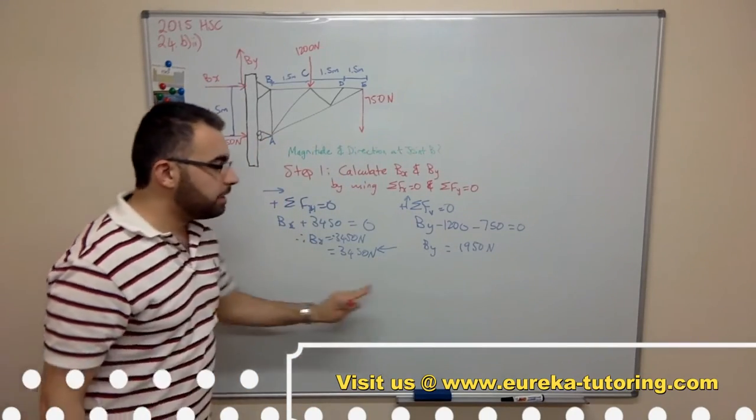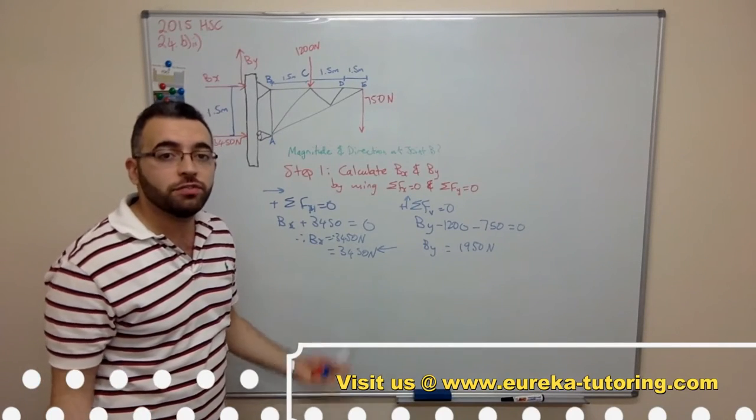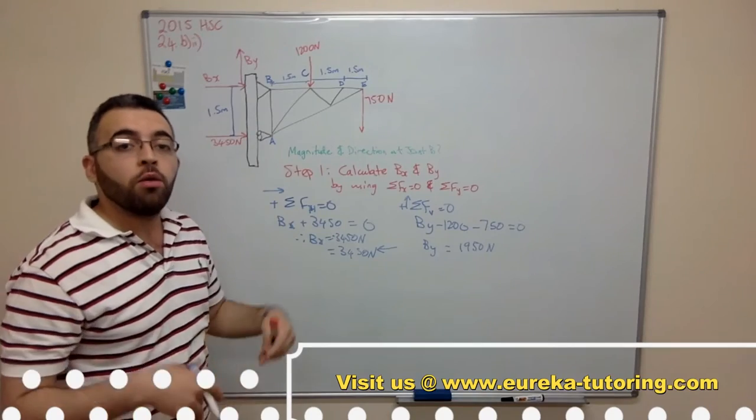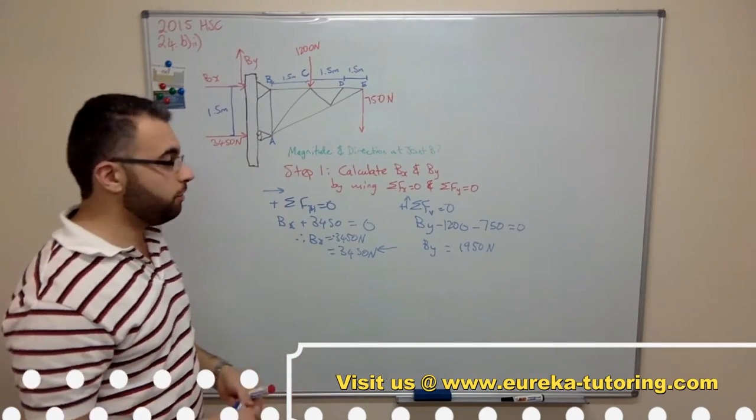Now we found Bx and By but we want the reaction force. So the next step is to form a right angle triangle whereby we can then use Pythagoras to find the reaction force.